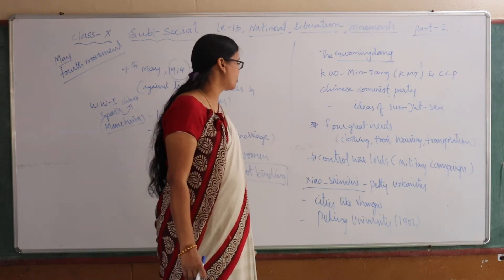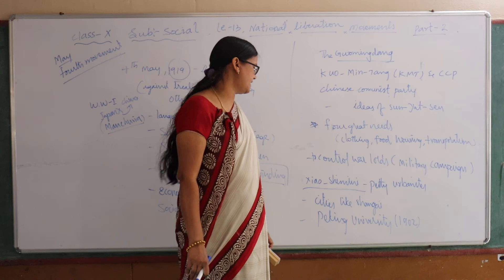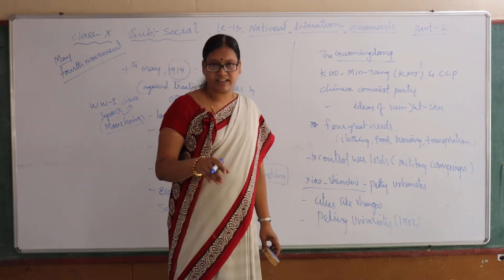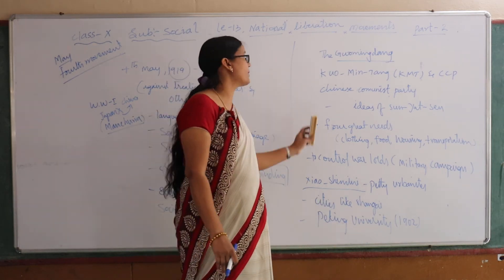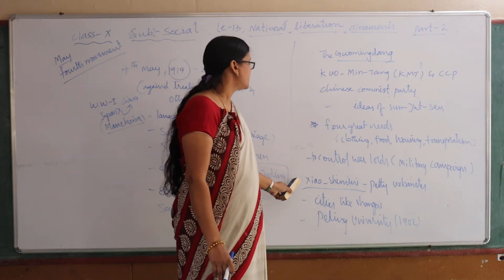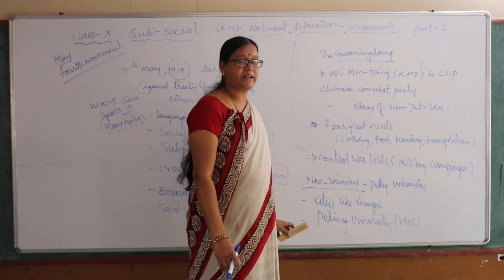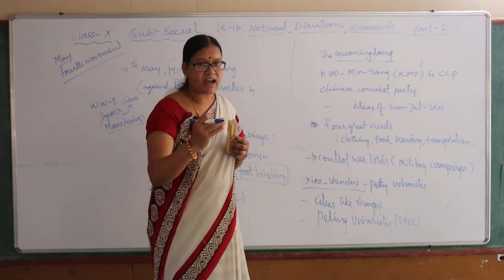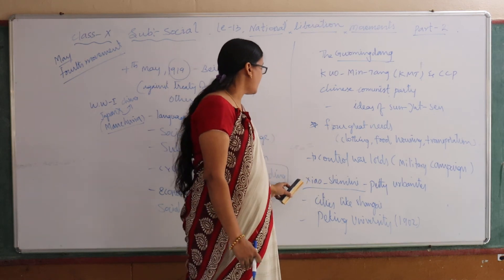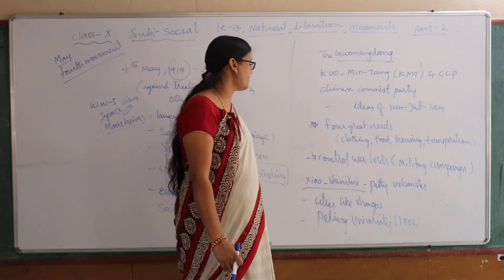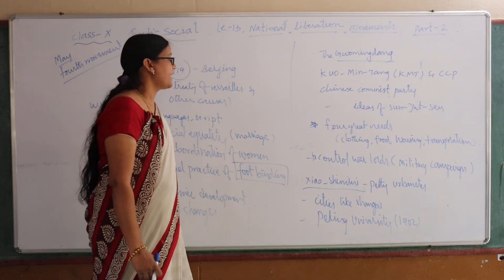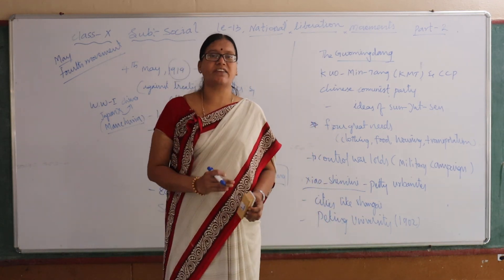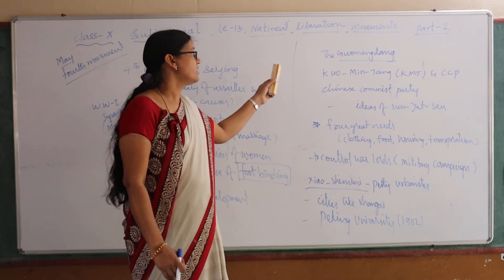Under this party, some development started in China — trade and business grew, and some cities like Shanghai began developing. A petty urbanized class emerged, meaning traders who stayed in urban areas and conducted small-scale trade and business. This class is referred to in Chinese as the Jiashimini. Peking University also started in this period around 1912, with the party giving importance to education in China.